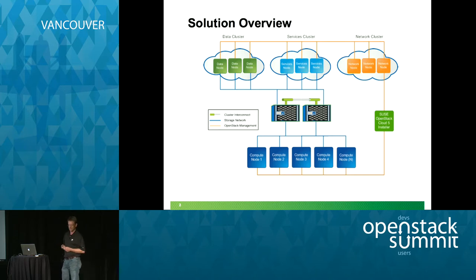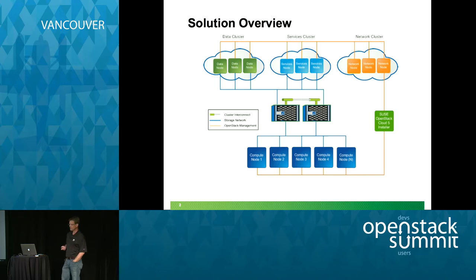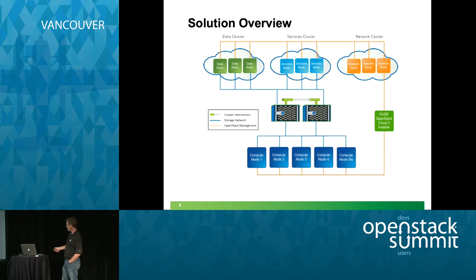If you have important workloads you want to run in the cloud, this architecture supports two to 200 compute nodes. We have a three-cluster design: a data cluster of three nodes, a services cluster of three nodes, and a network cluster of three nodes — a lot of horsepower to support a large, growing number of compute nodes. All mediated by the SUSE OpenStack Cloud 5 installer, which does all the Pixie booting and discovery.